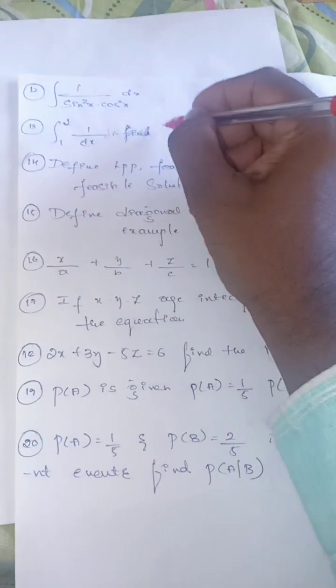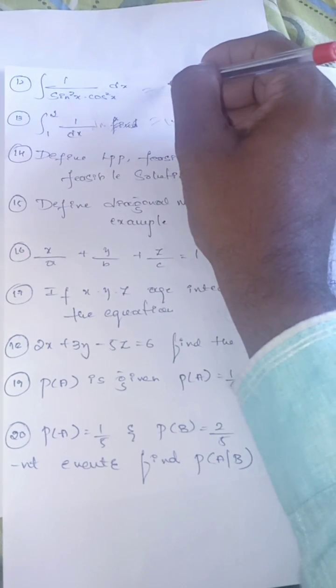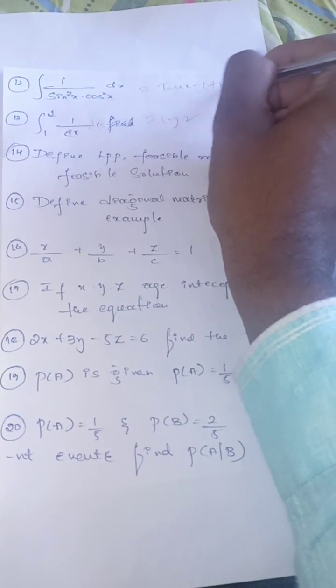The answer for this is log 2. Answer for this is tan x minus cot x plus c.